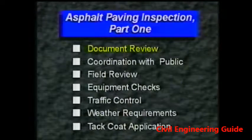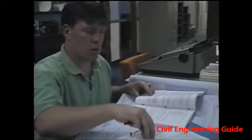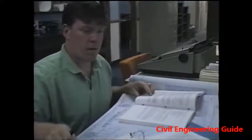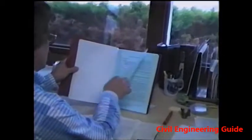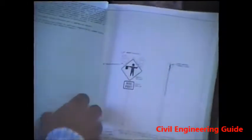Document review. First, as with any project, review the contract documents. This includes your agency's bid specifications, including amendments, any special provisions, the appropriate sections of the construction manual, and the traffic control plan. Paving details can vary significantly from one job to the next, especially for traffic control. The traffic control plan identifies the types of signs and devices necessary, as well as their placement. So always study it carefully.